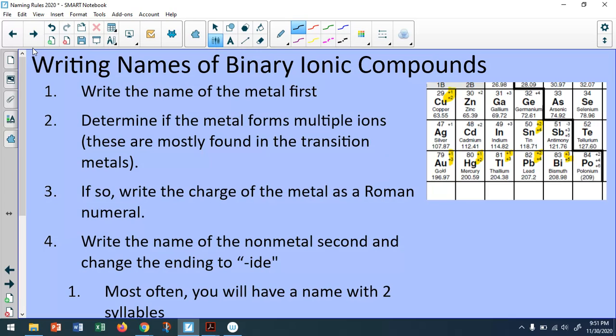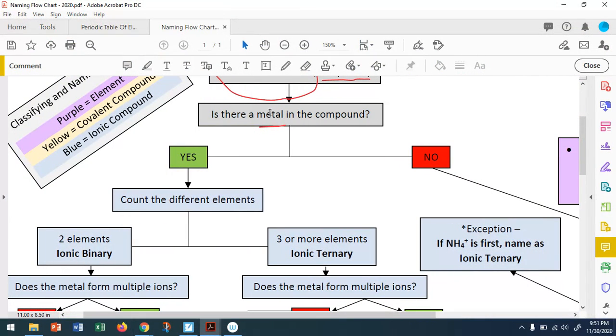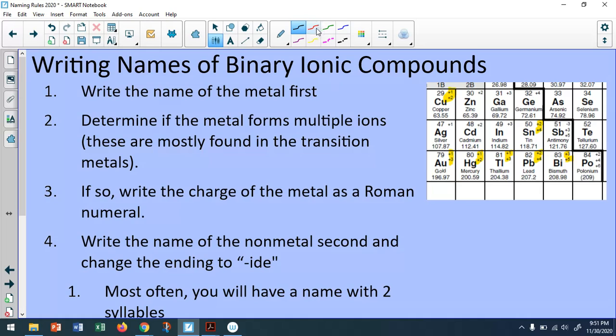So now let's get into the good stuff. We want to write the names of binary ionic compounds. What we've gotten to here is we've identified that there is a metal in the compound. And when we counted the elements, we arrived at having two. Binary, bi like bicycle, means two. Two elements. The first element is going to be a metal. Think about reading the periodic table from left to right. The metal comes first and the non-metals come second. These compounds are written the same way.